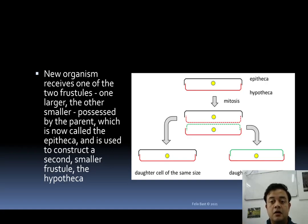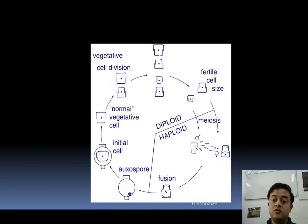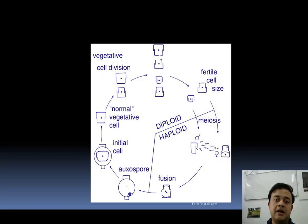This is vegetative reproduction, and after many generations the average cell size in the population becomes progressively smaller. This is a problem for diatoms, which is why they need sexual reproduction via meiosis. Meiosis brings back the original cell size because the size of the theca is determined by the genome.